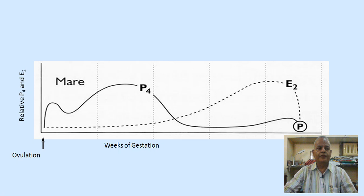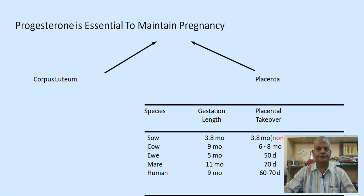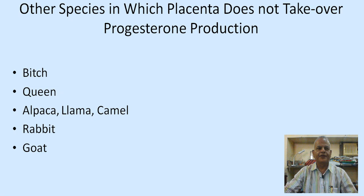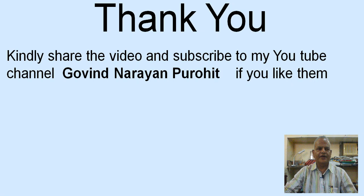Progesterone is essential to maintain pregnancy in species like the sow and cow, but less important in the ewe and mare, where placental takeover occurs by day 15 in the ewe and day 70 in the mare, with the placenta producing sufficient progesterone from those days. In other species — the bitch, queen, alpaca, llama, camel, rabbit, and goat — the placenta does not take over progesterone production, so the corpora lutea must continue producing it. Thank you very much; please share the video and subscribe to the YouTube channel.